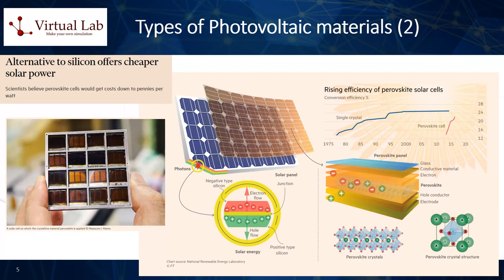Three: perovskite solar cells. Perovskite materials have emerged as a promising photovoltaic technology due to their high efficiencies and potentially lower manufacturing costs; however, issues with longevity and stability still need to be overcome. Four: multi-junction solar cells. These use multiple layers of different photovoltaic materials to capture a wider range of the solar spectrum and achieve very high efficiencies. They are mostly used in space applications due to their high cost.